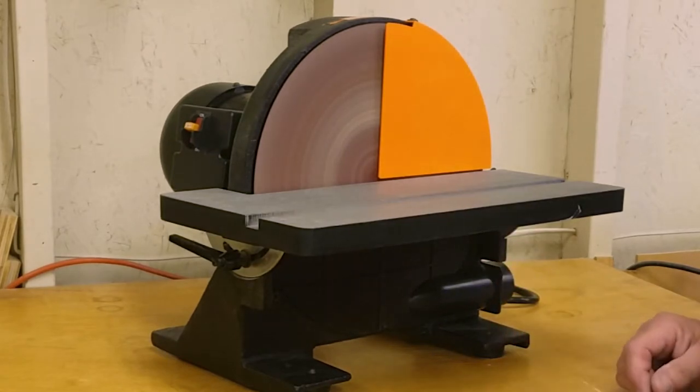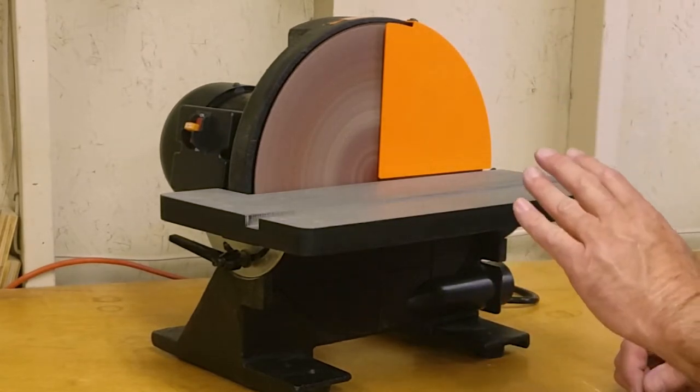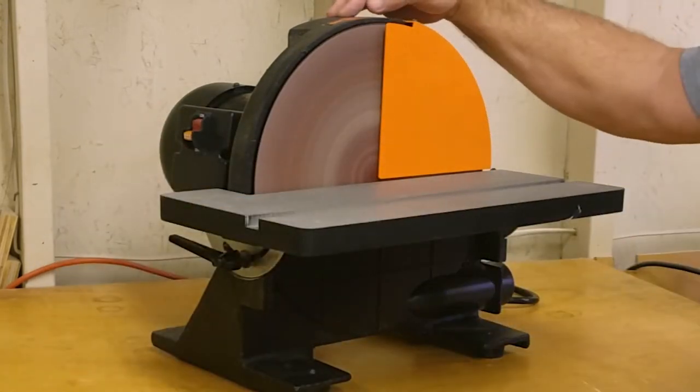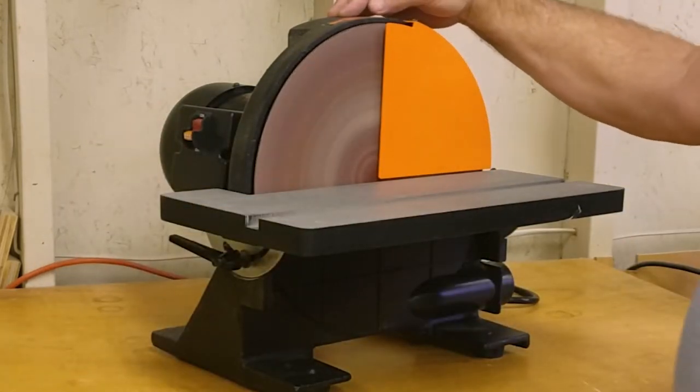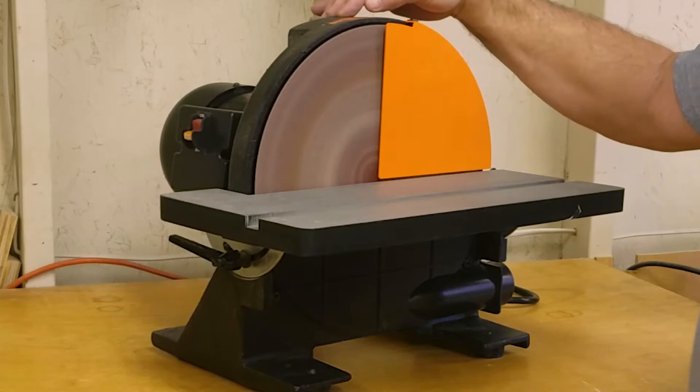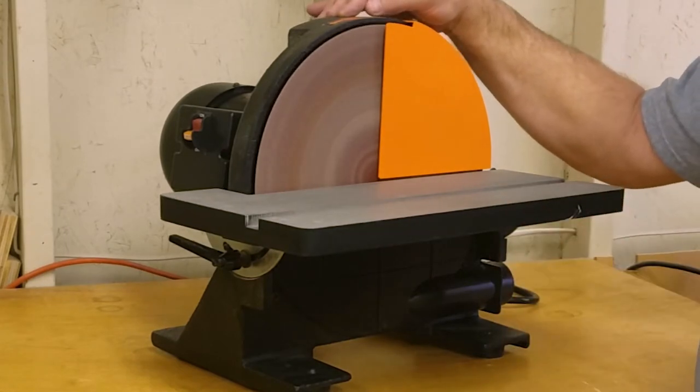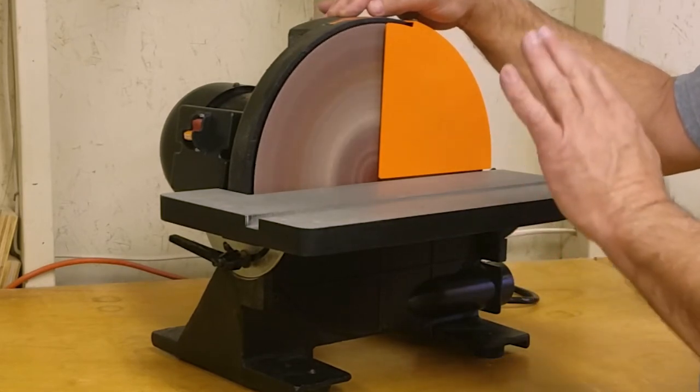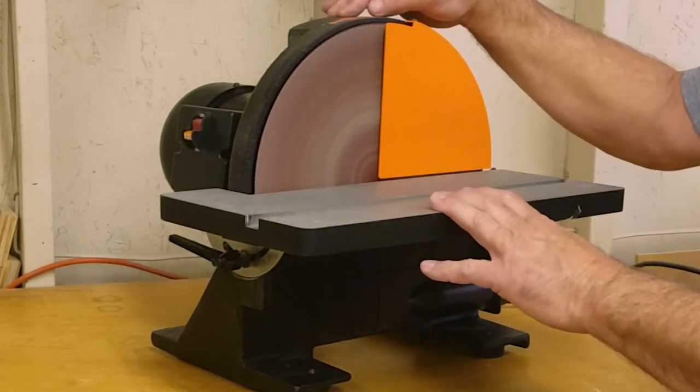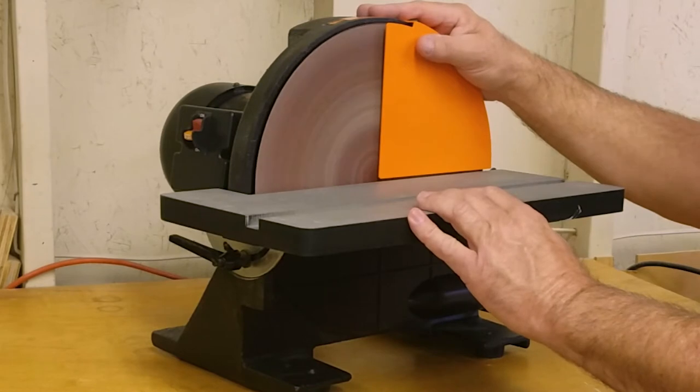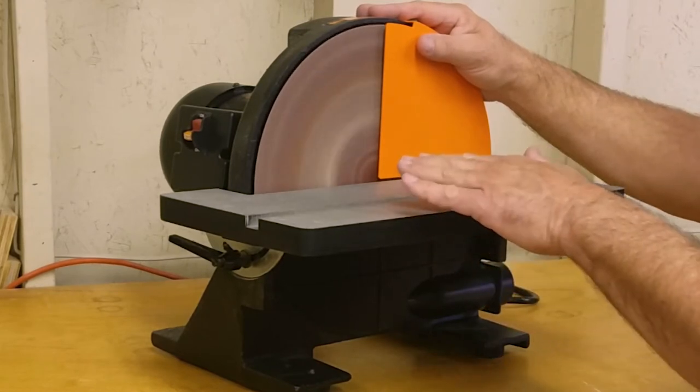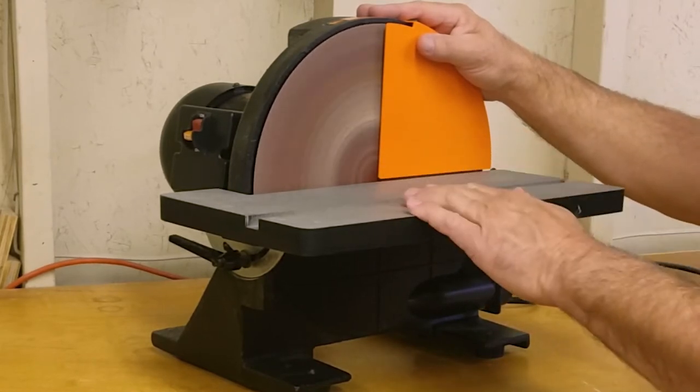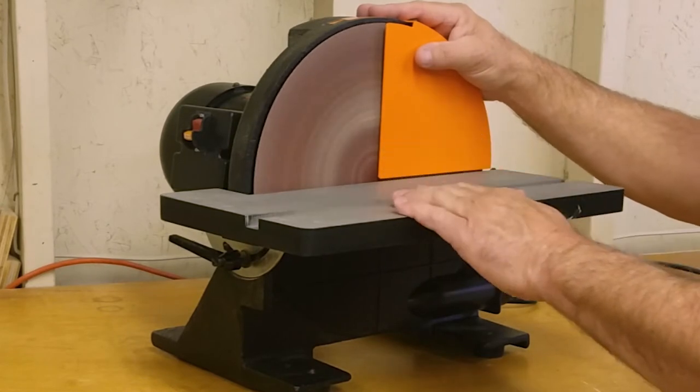As you can see it does take a minute to get up to speed and since it takes quite some time to come to a stop. Of course if this is a problem in your shop you can just use a scrap piece of wood and hold it against the sanding disc until it stops.